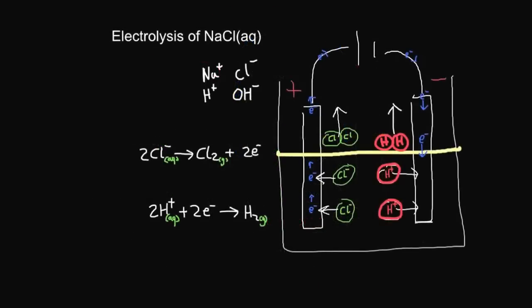In this example, we've now got sodium solution. Sodium solution is completely different to molten sodium. In molten sodium, we just had sodium and chloride ions. In solution, we've also got water. Water splits up into H+ and OH-. So we've got four ions to deal with: two negative and two positive ions.